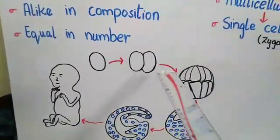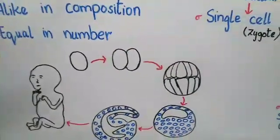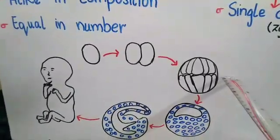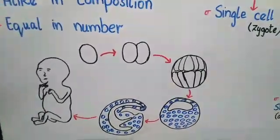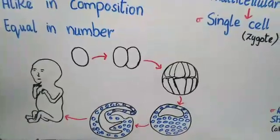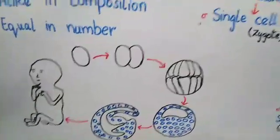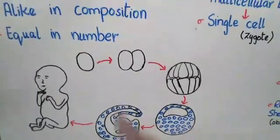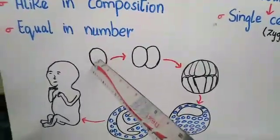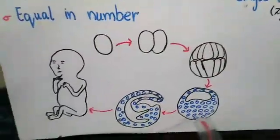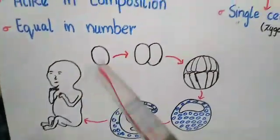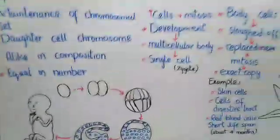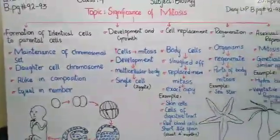Starting from the zygote, we call the next process cleavage, in which the cell divides into many smaller cells. There are many stages such as morula and blastula, with different changes occurring. These are developmental processes you will study further in later classes. So the zygote, developed from a single cell, gives rise to a multicellular body which is a combination of many cells. This shows the role of mitosis in development and growth.